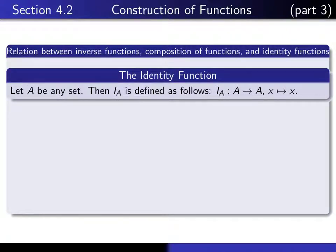Here's the definition of the identity function on a set. If A is any set, then the function which we denote by I sub A, known as the identity function on A, is defined to be the function from A to A, which sends each x to itself.